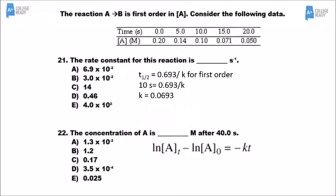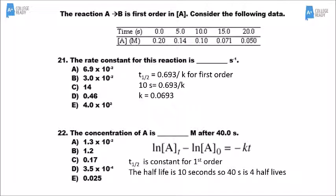For number 22, we could use the integrated rate law with K from number 21 to solve for concentration at 40 seconds. However, there's a simpler way: in a first-order reaction, the half-life is constant. The data table shows the half-life is 10 seconds. Since 10 seconds is one half-life, 40 seconds is four half-lives. We take the initial quantity and cut it in half four times, getting 0.0125 — answer A.